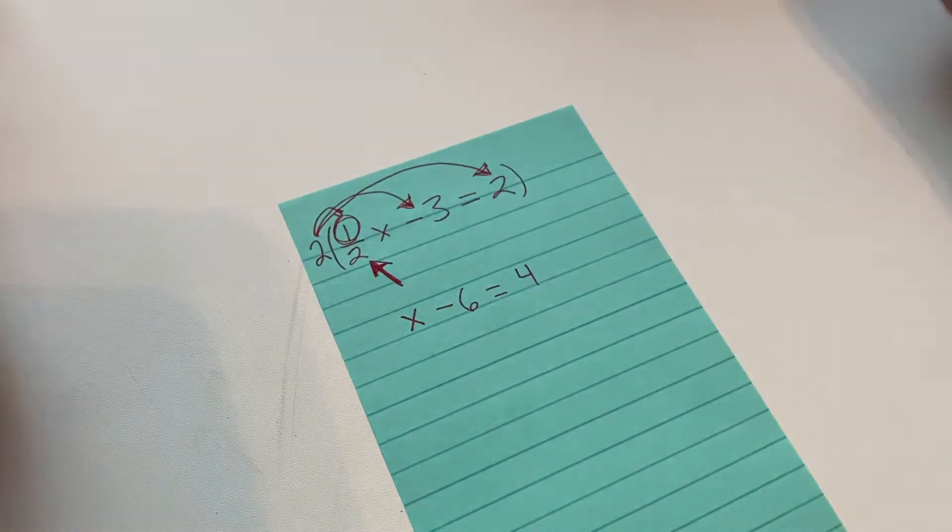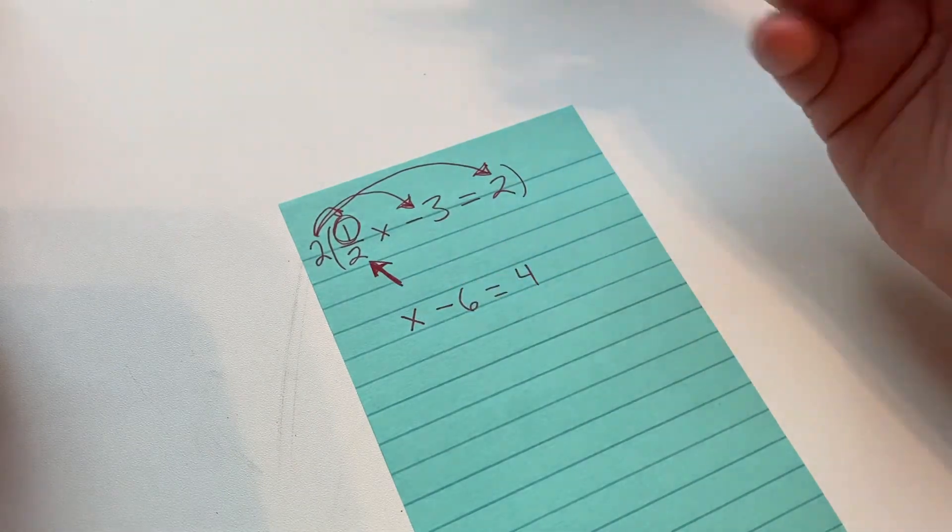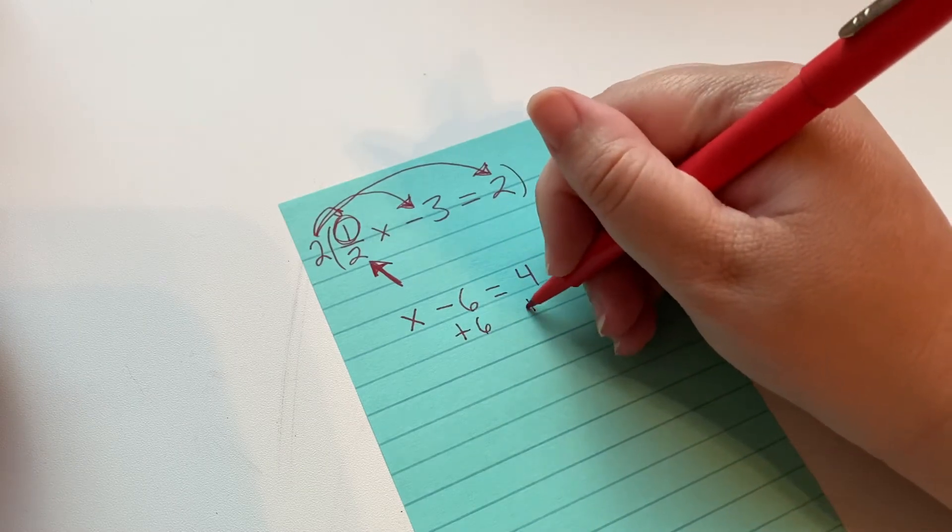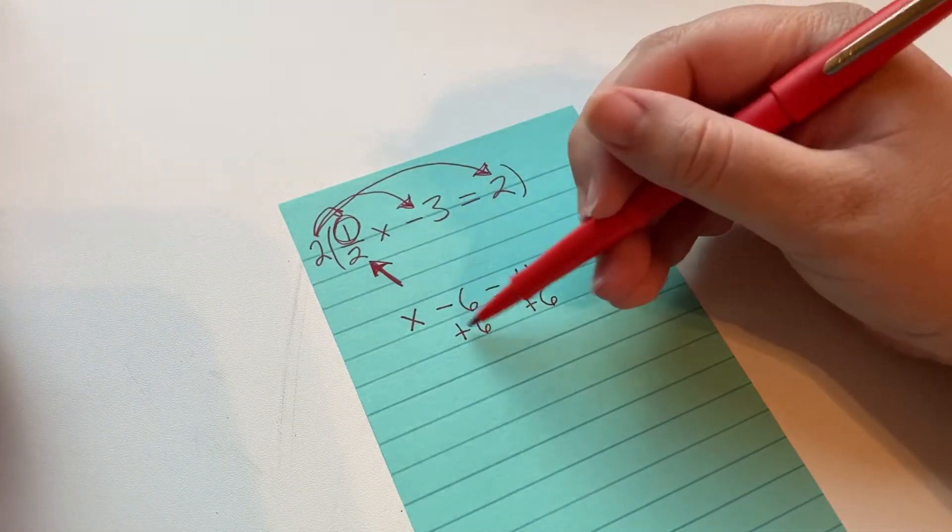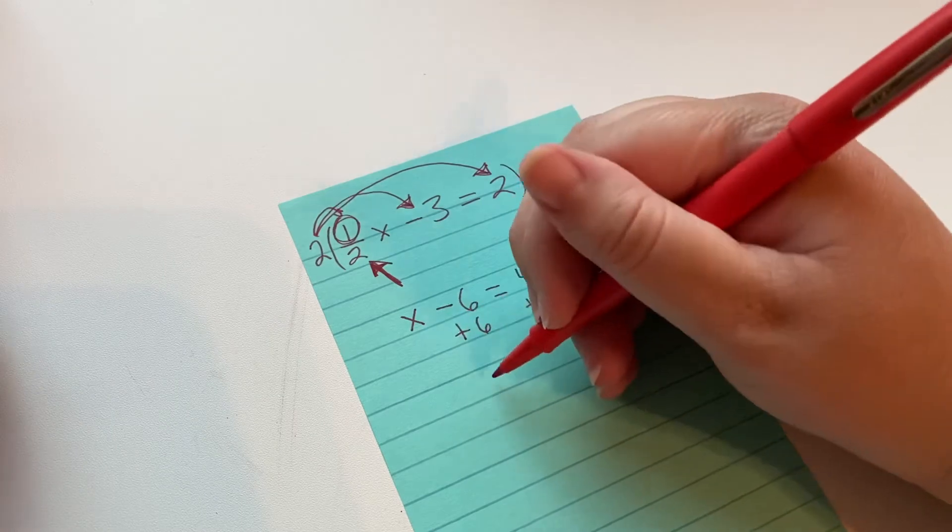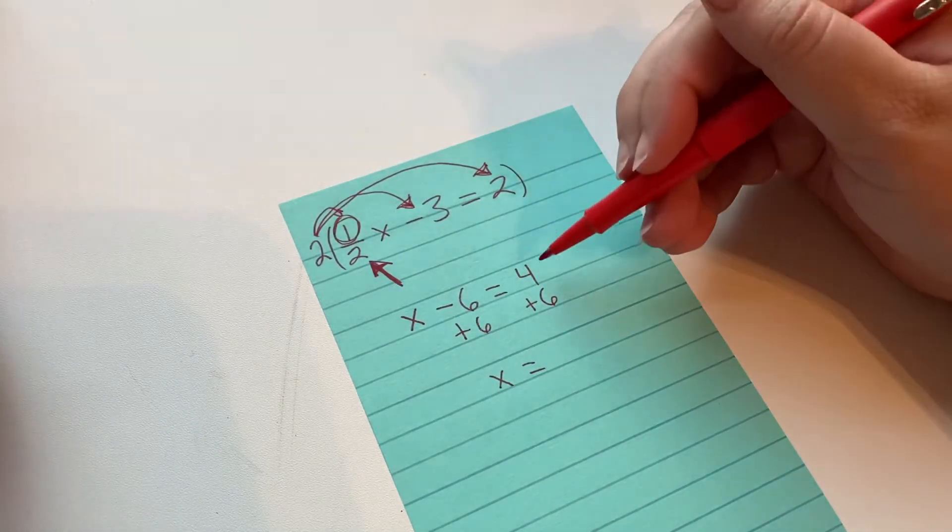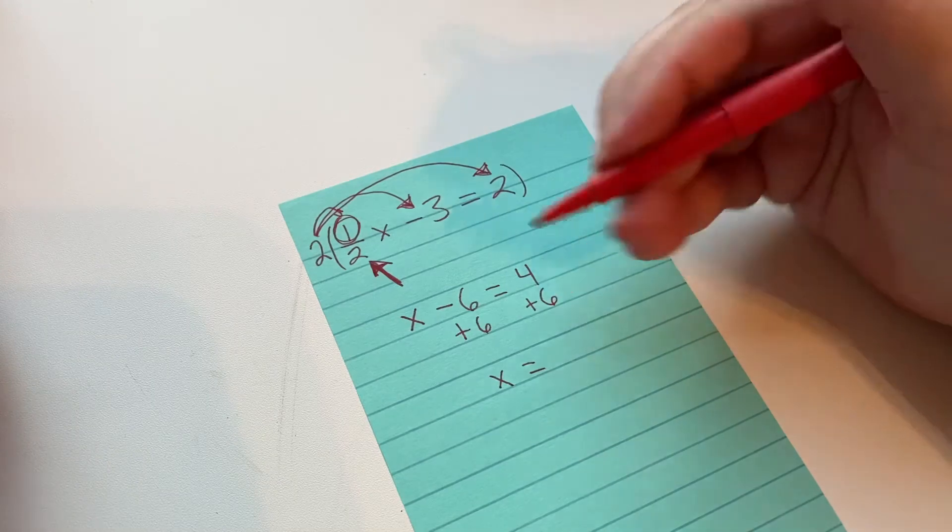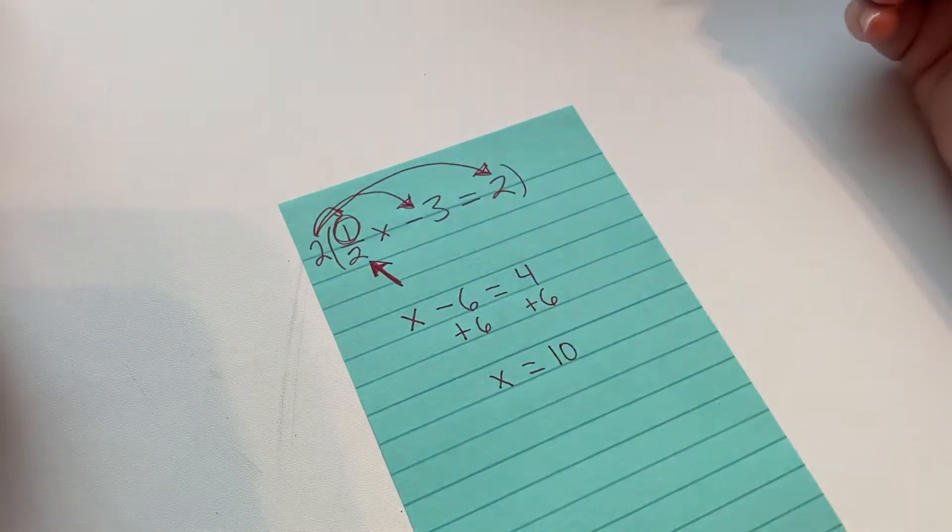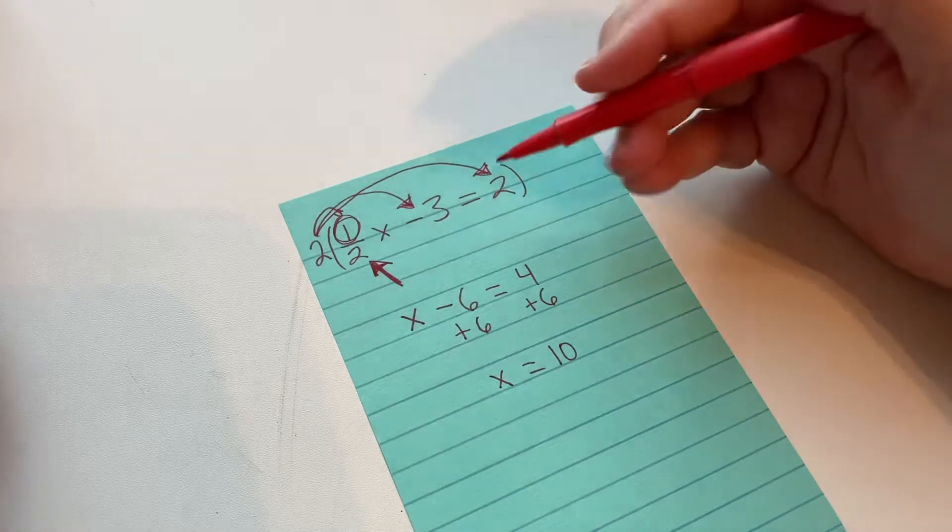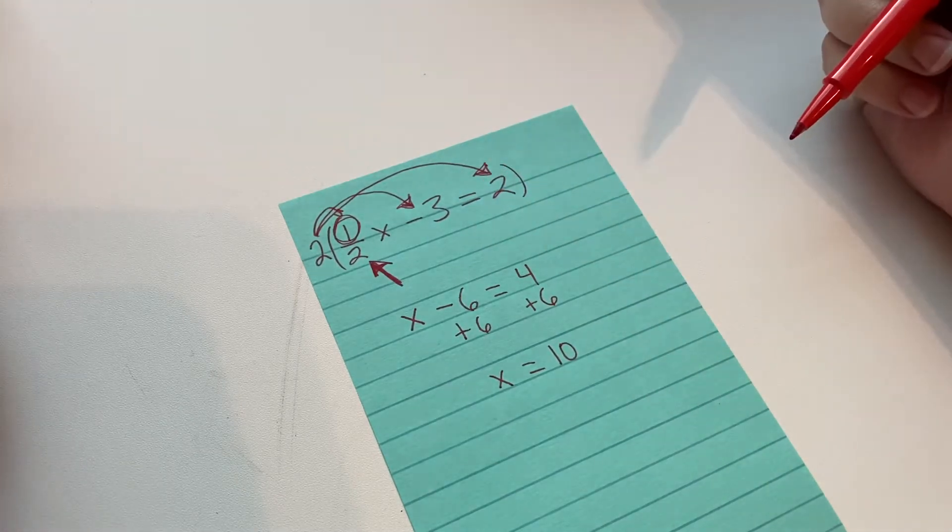You might just be able to figure it out with mental math. Something minus 6 equals 4. But if you just want to be sure you can add 6 to both sides. That eliminates our negative 6 and we have x left. And then over here it's 4 plus 6 which equals 10. Half of 10 is 5. 5 minus 3 is 2. So that works out. That's correct.